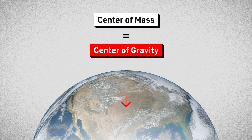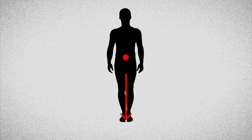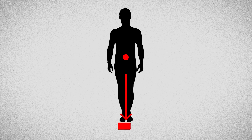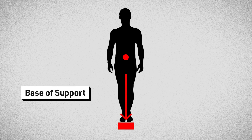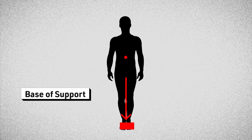Knowing the center of gravity can help us understand how a person maintains balance. For example, for a person who is standing still, balancing easily, the downward projection of their center of gravity should be inside their base of support — meaning within the area outlined by any body parts in contact with the ground, usually one or two feet.